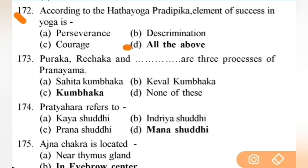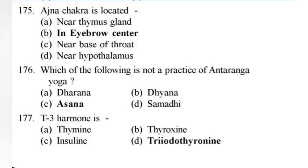Puraka, Rechaka, and Kumbhaka are the processes of pranayama — right answer is Kumbhaka — Puraka, Rechaka, and Kumbhaka. Next: Pratyahara refers to — right answer is Manashuddhi — mental purification. Next: Agya Chakra is located at the eyebrow center.